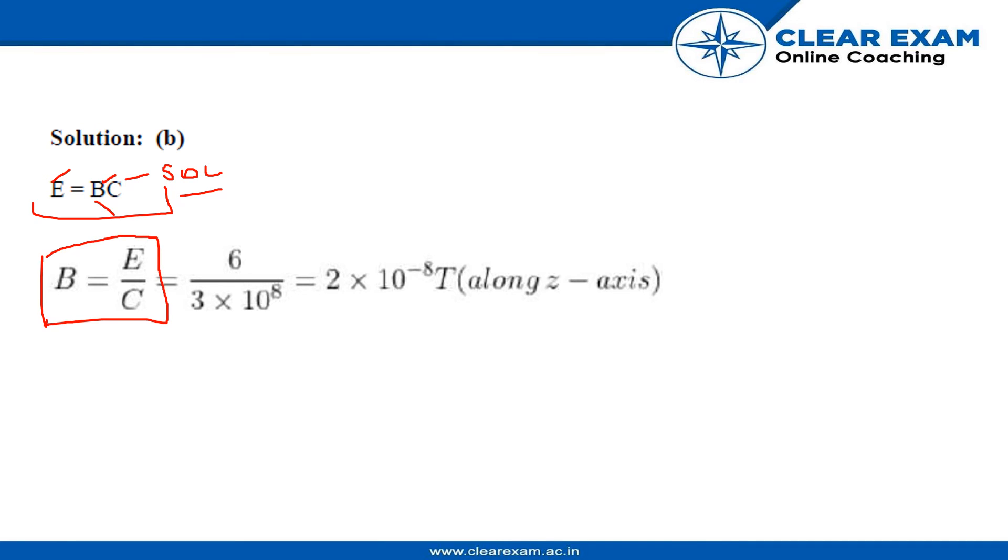We have E = 6 volts per meter and c = 3×10^8. Substituting these values: B = 6/(3×10^8) = 2×10^-8 T along the z-axis. Therefore, option B is the right answer.